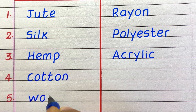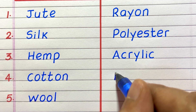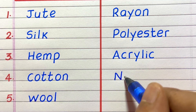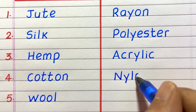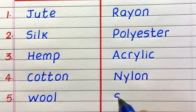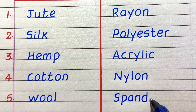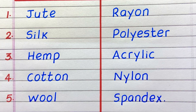Fifth natural fiber is wool. Fourth example of an artificial fiber is nylon, and the fifth is spandex.